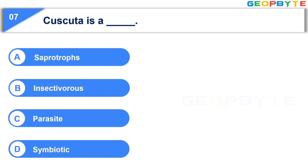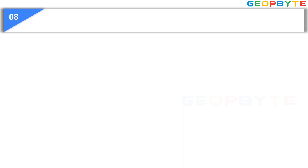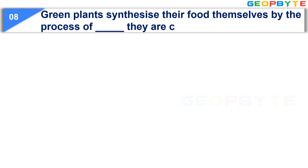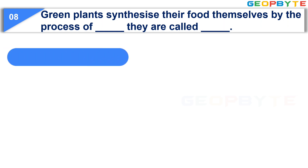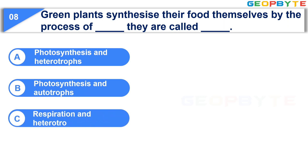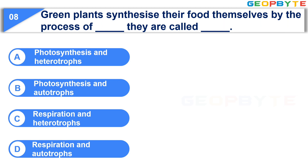Your time is up and the correct answer is Option C, Parasite. Moving to the eighth question: Green plants synthesize their food through dash. Option A: Photosynthesis and Heterotropes. Option B: Photosynthesis and Autotropes. Option C: Respiration and Heterotropes. Option D: Respiration and Autotropes. Your time starts now.